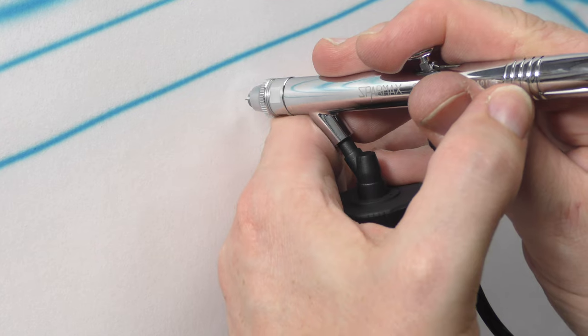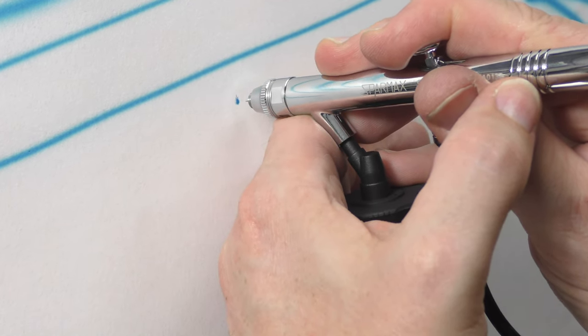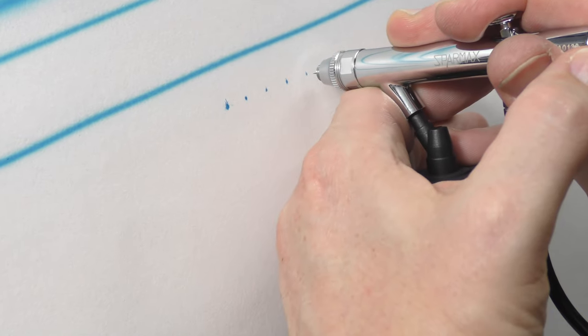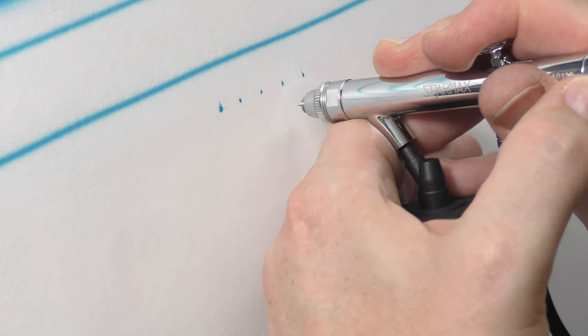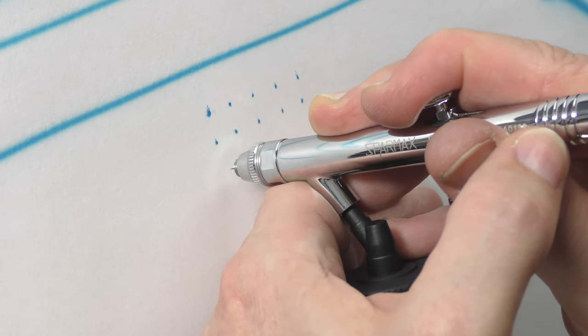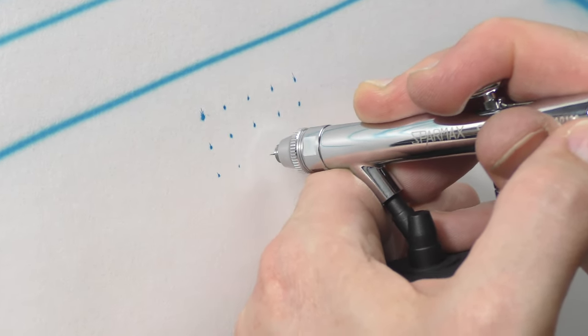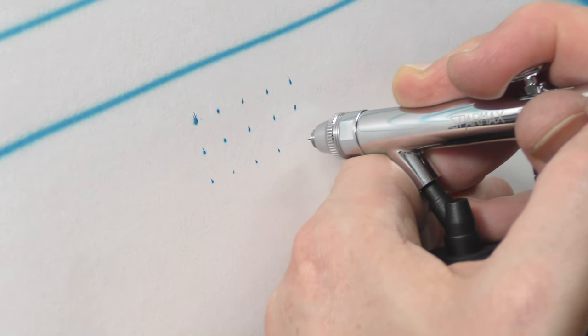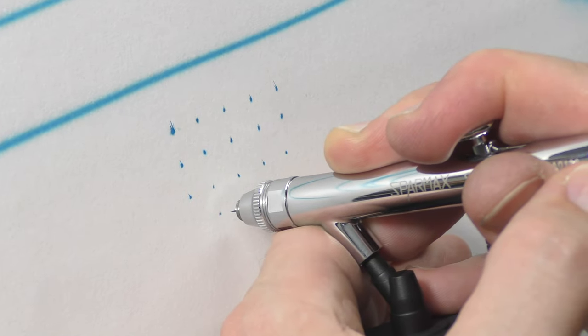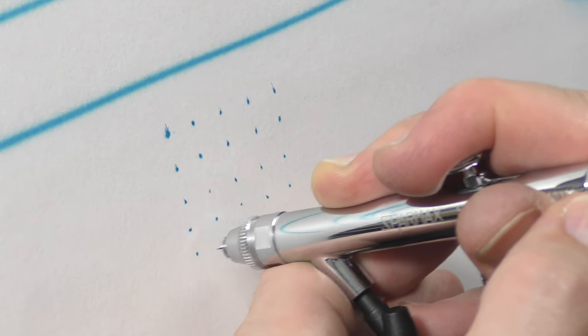And again resting on the surface to do some fine dots. Went a bit heavy on that one. This one's a 0.5 mil, so a bit thicker than the Eclipse which is a 0.35, but you can still get some nice fine dots out of it no problem at all. And the way I'm holding it makes it really comfortable.